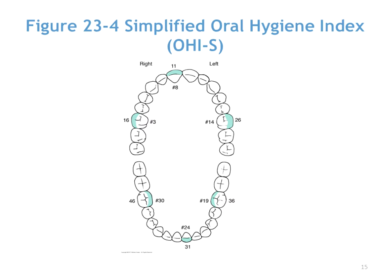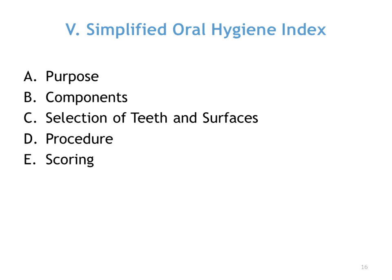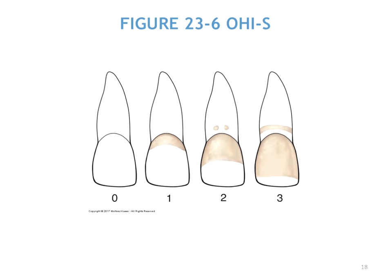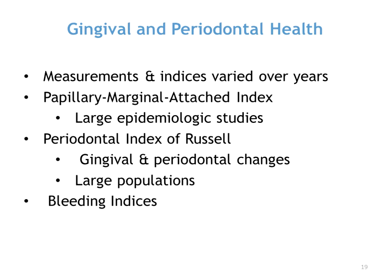The same scoring can be done for the calculus index, which also uses those specific teeth. The OHI-S scores zero through three. The calculus index does the same on the same teeth: zero is no calculus, one is calculus in the cervical area, two is calculus covering up to half the tooth and starting to go subgingivally, and three is calculus covering most of the tooth including subgingival deposits. Again, the lower the number, the better.